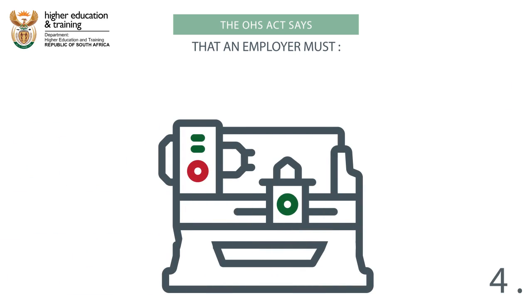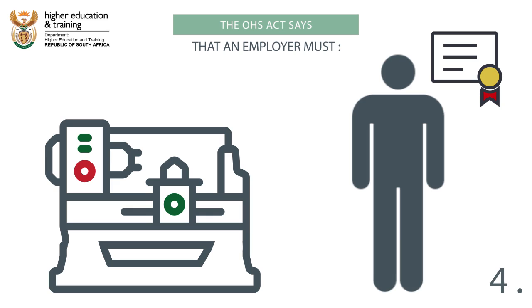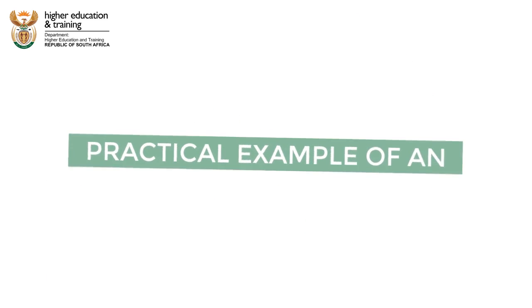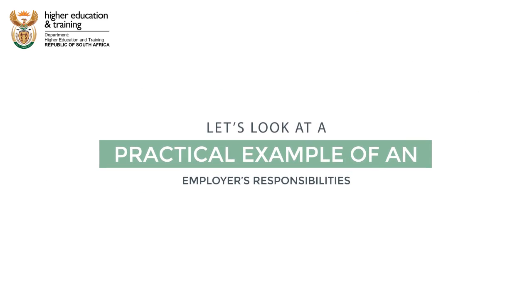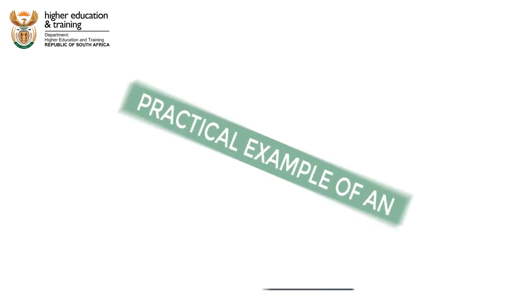4. Ensure that work performed or machinery used is done under the supervision of someone who understands the hazards and has the authority to ensure precautionary measures are taken by employees. Let's look at a practical example of an employer's responsibilities.